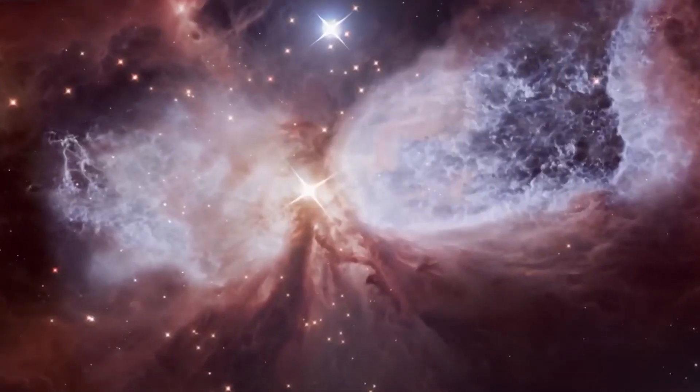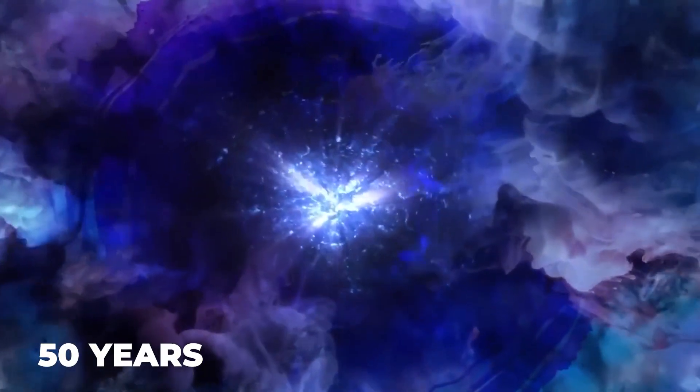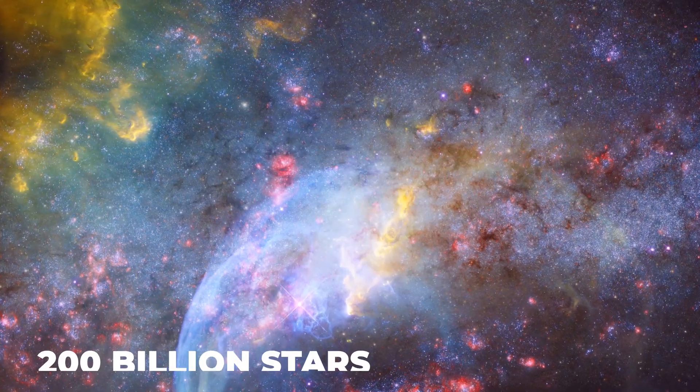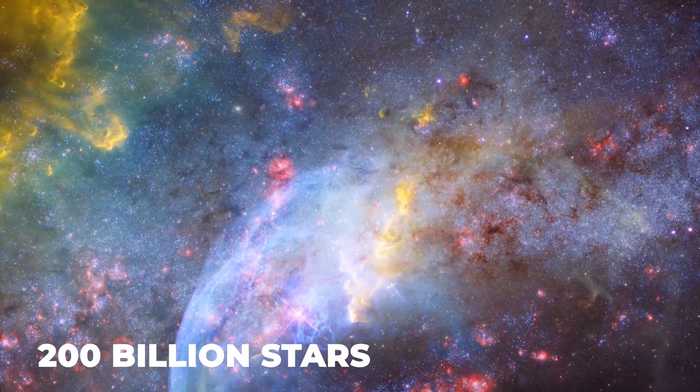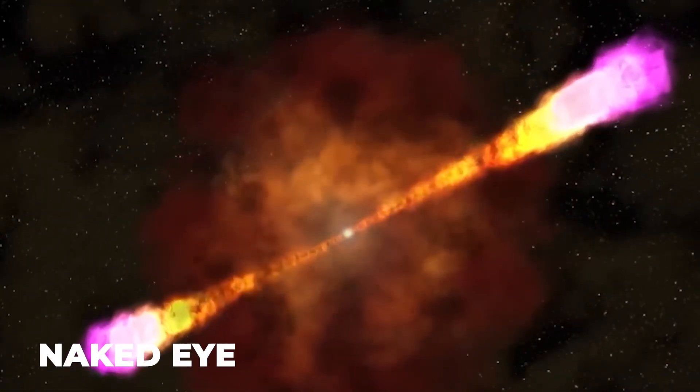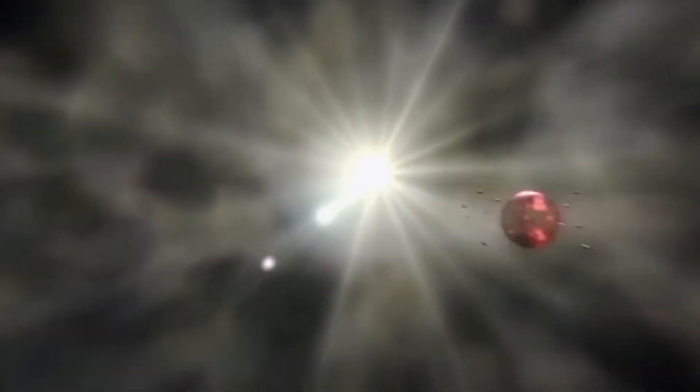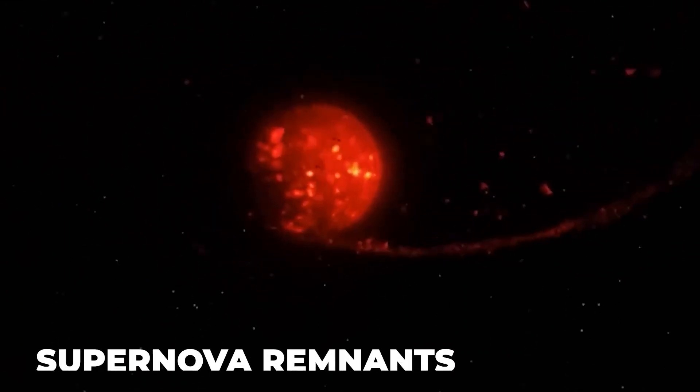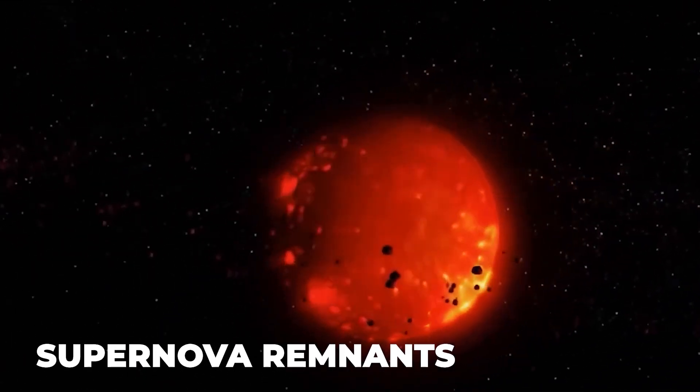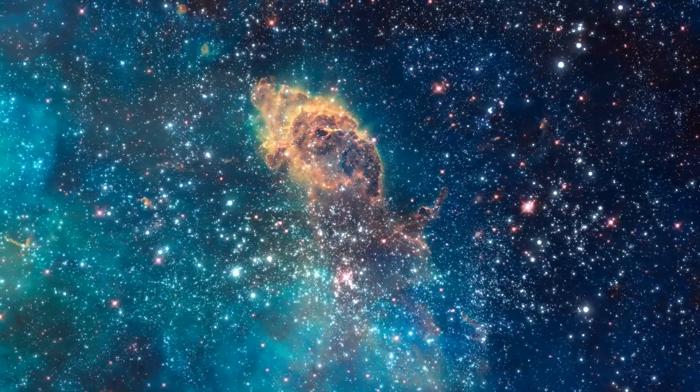A supernova should occur as frequently as every 50 years in a galaxy the size of our Milky Way, which has about 200 billion stars. Supernovae that can be seen with the naked eye are incredibly uncommon. One may or may not appear in your lifetime. What we see are expanding clouds in space that were once stars called supernova remnants. There are numerous instances both within and without our galaxy.